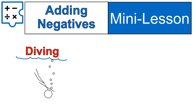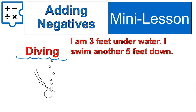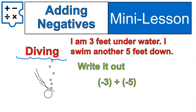Now let's talk about adding negatives with diving. If I'm 3 feet under the water and I swim down another 5 feet, take out your notebook and write out how you would write that as an expression. You'd write negative 3 plus negative 5. You can also write this as negative 3 minus 5 — they mean the same thing. So negative 3 plus negative 5 means we start at negative 3 and go down 5 more, which brings us to negative 8, or 8 feet below the surface.